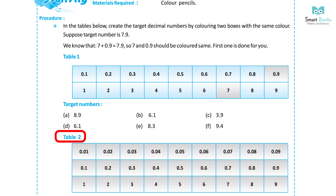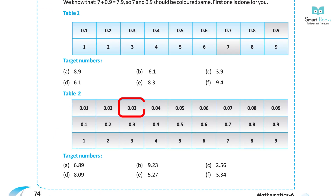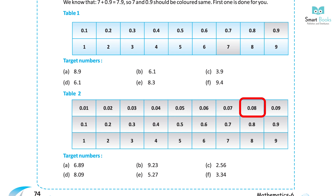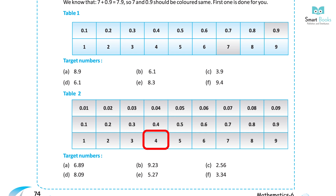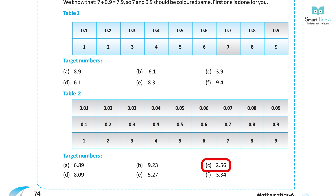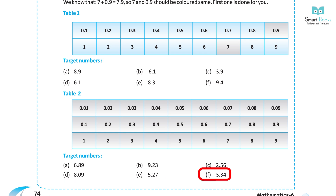Table 2 uses smaller decimal values including hundredths such as 0.01, 0.02, 0.03, up to 0.09, combined with whole numbers 1 through 9. Table 2 target numbers: A. 6.89, B. 9.23, C. 2.56, D. 8.09, E. 5.27, F. 3.34.